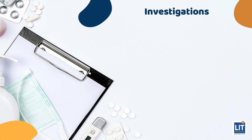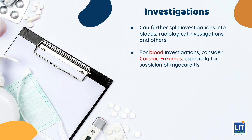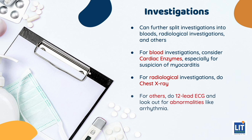For investigations when working up a child with chest pain, we can split investigations into bloods, radiological investigations, and others. For blood investigations, consider doing cardiac enzymes, especially if you suspect acute myocarditis. A full blood count can be done to look at total white cell count, which may be suggestive of an underlying infection. For radiological investigations, a chest X-ray should be done. A 12-lead ECG should also be done, looking out for any abnormalities such as arrhythmias. A cardiology referral for a 2D echocardiogram should be done if there are red flags on history and physical examination. 2D echos are useful to rule out structural abnormalities, wall motion abnormalities, and to assess cardiac function, as well as to look out for the presence of any pericardial effusion.